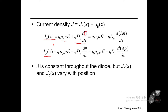The electron concentration can be replaced with excess electron concentration because n sub p0 is constant. Once the constant is differentiated by x, that would be zero.